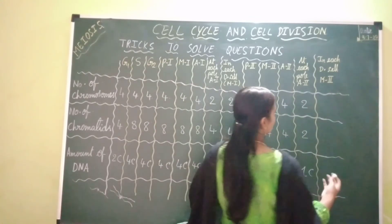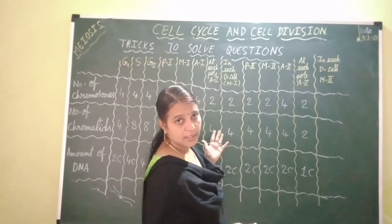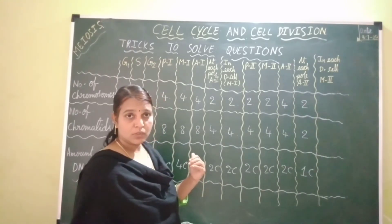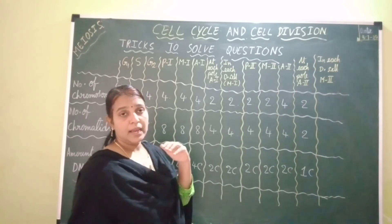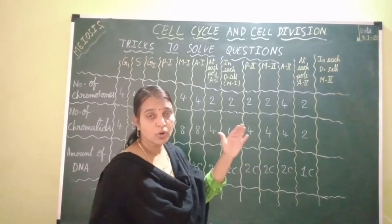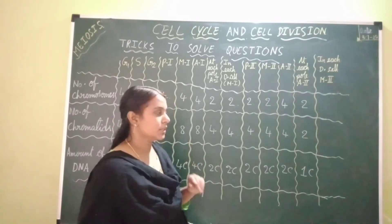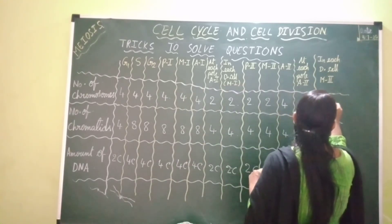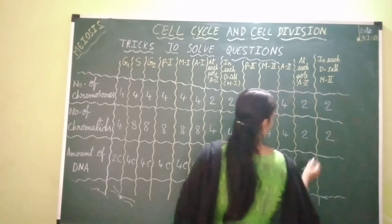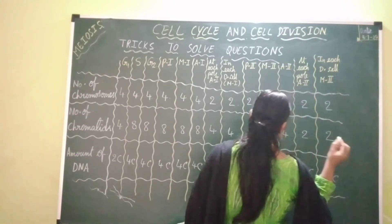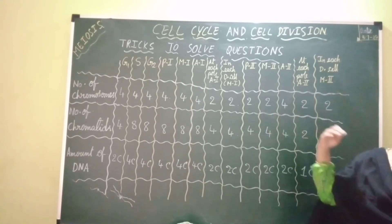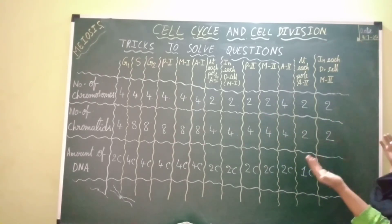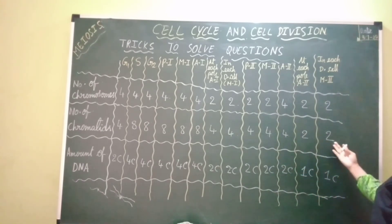Telophase 2 is similar to each pole of anaphase 2. After cytokinesis 2, four daughter cells are formed in total — because two parent cells each produce two daughter cells. Each daughter cell of meiosis 2 has two chromosomes, each with one chromatid, so two chromatids and 1C amount of DNA. Comparing with the parent meiocyte that entered G1: chromosomes reduced from four to two, chromatids from four to two, and DNA from 2C to 1C — all reduced to half.